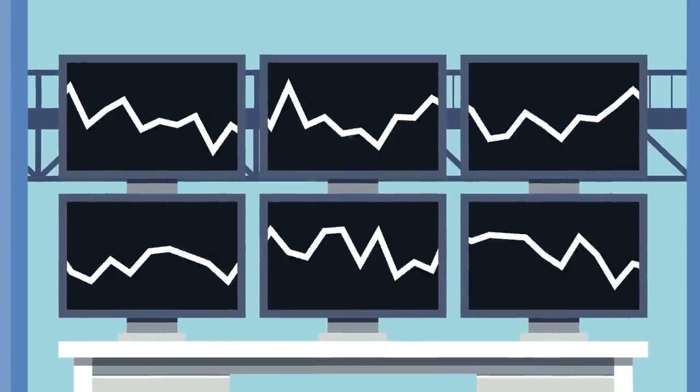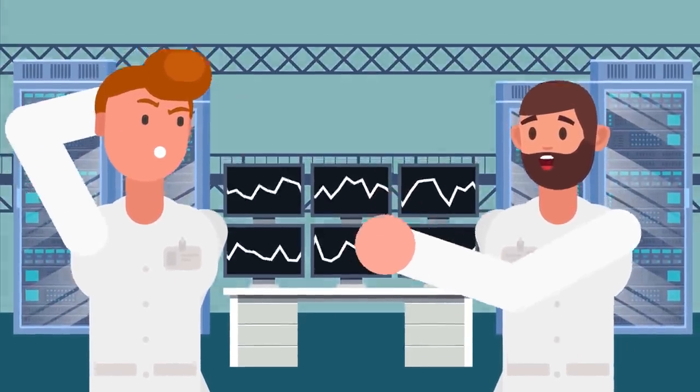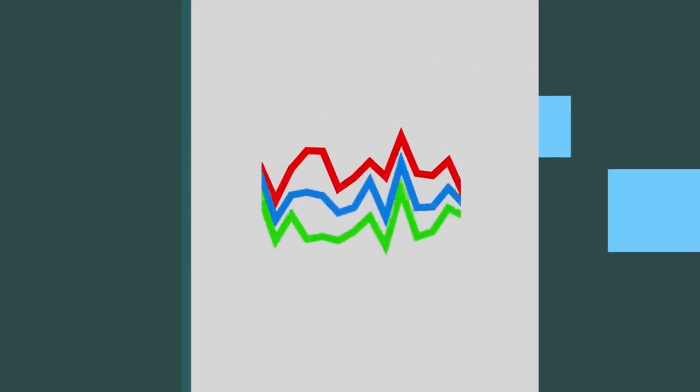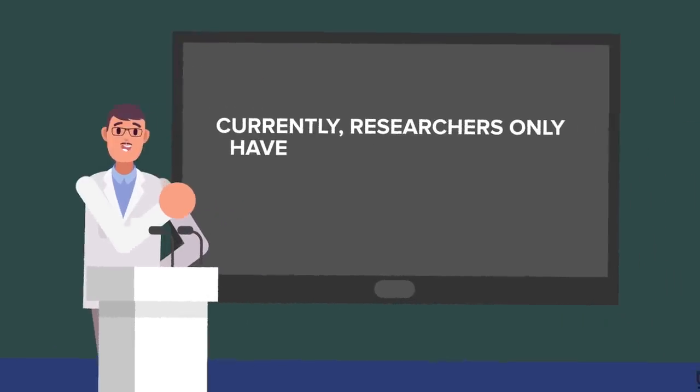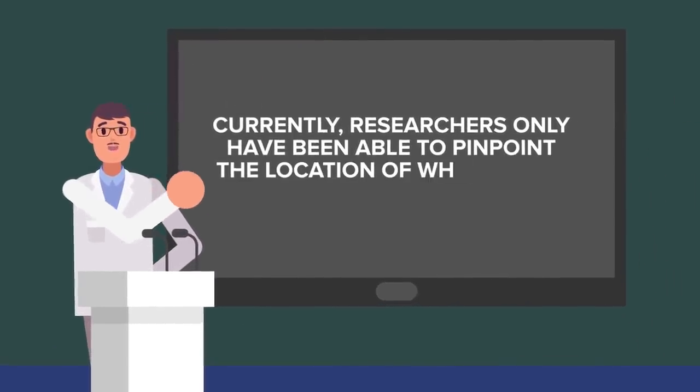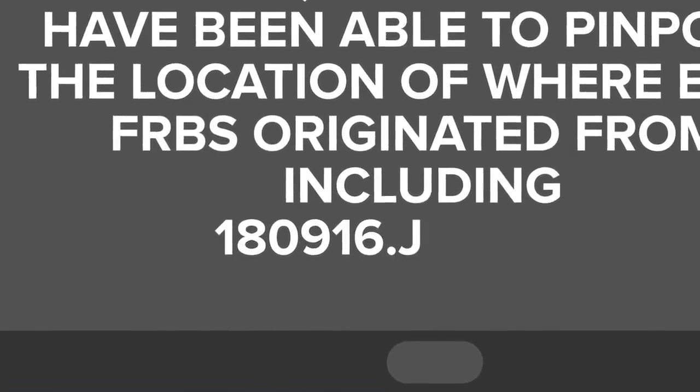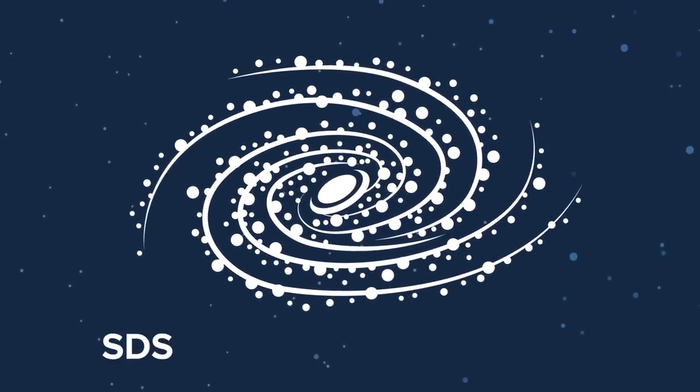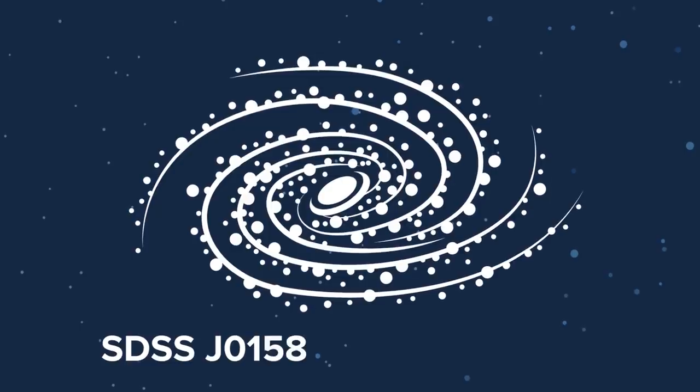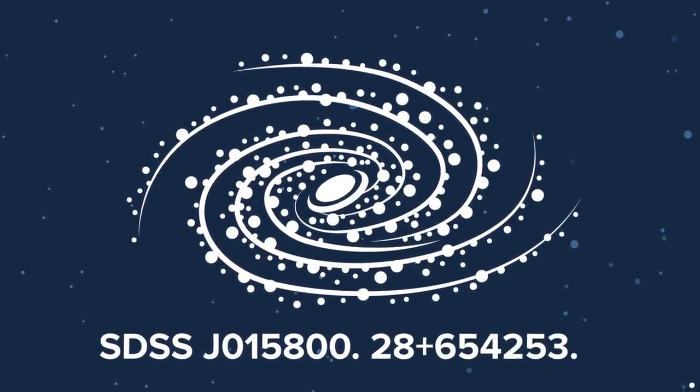Interestingly, each burst of signals have been different. As of yet, there has been no discernible repeating or overlap of the signal. However, there are enough similarities between the flares to suggest that they are part of a single repeating pattern. Currently, researchers have only been able to pinpoint the location of where eight FRBs originated from, including 180916.J0158-65. This FRB is coming from the edges of a nearby spiral galaxy SDSS J015800.28654253.0.